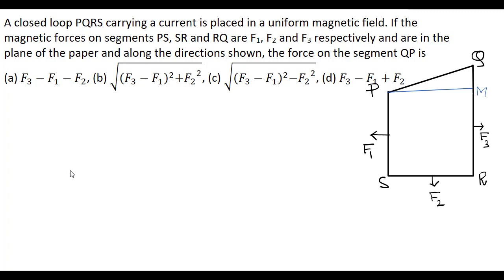Now to find the force on QP, draw a line PM. Now the force acting on QR is F3 and the force acting on PS is F1.